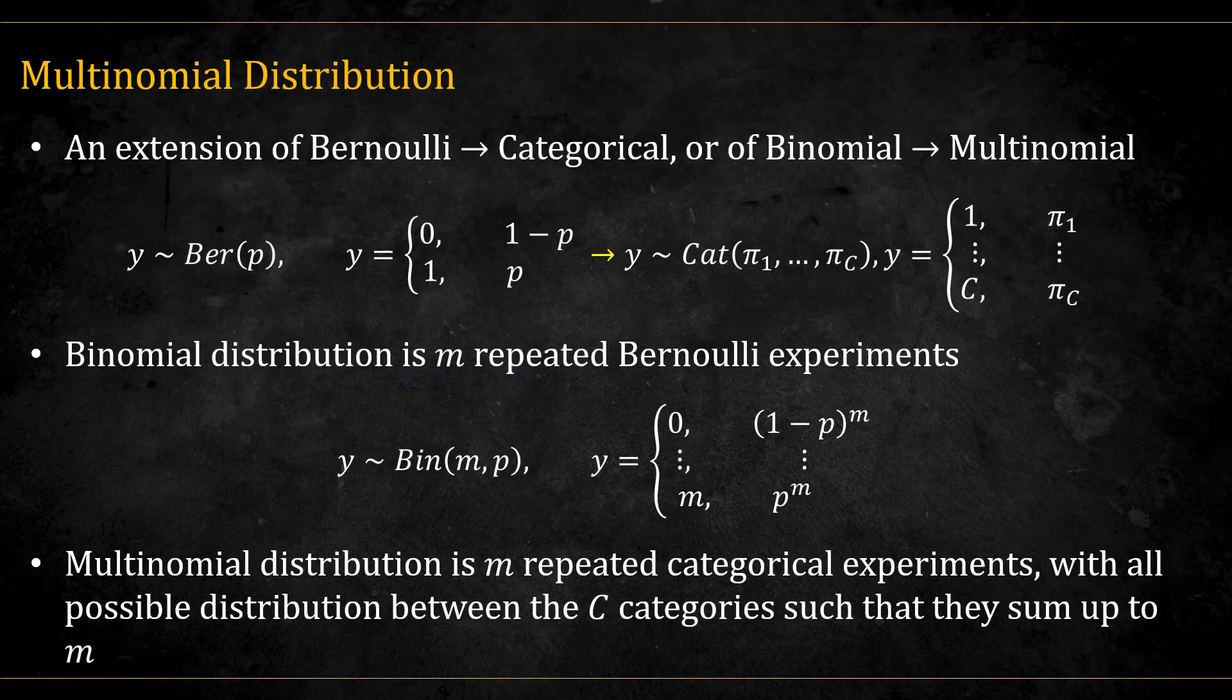Let's review the categorical distribution, which is an extension of the Bernoulli, and its bigger brother, the multinomial distribution, which is an extension of the binomial.